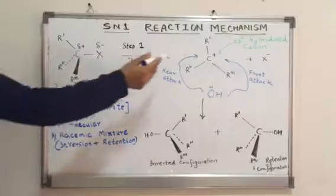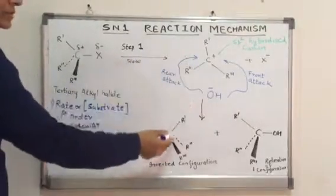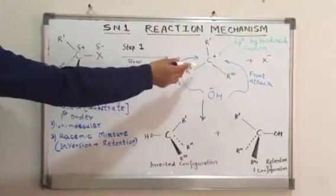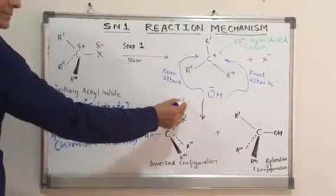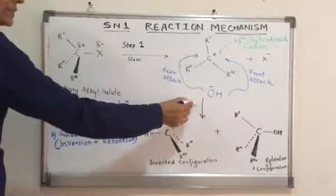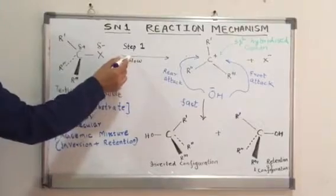The second step resulting in the formation of stable molecules from an unstable intermediate would be fast. Hence, our first step becomes rate-determining.